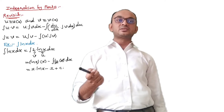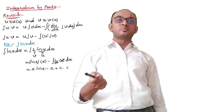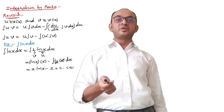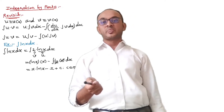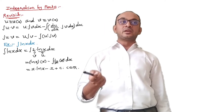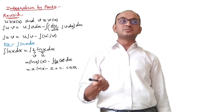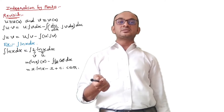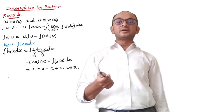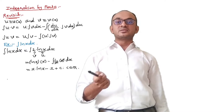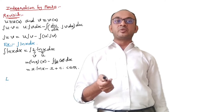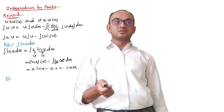This gives us x·ln(x) minus the integral of 1, because x and 1/x cancel out. That gives x·ln(x) minus x plus an arbitrary constant c. So the integration of ln(x) is x·(ln(x) − 1) + c, where c is an arbitrary constant.